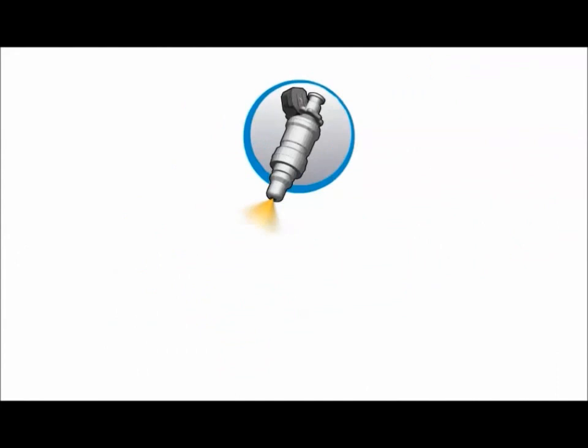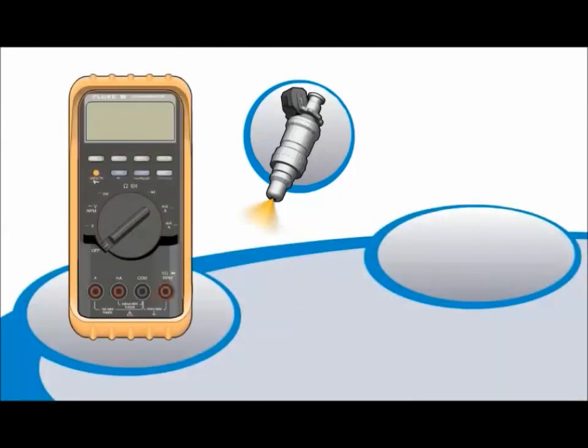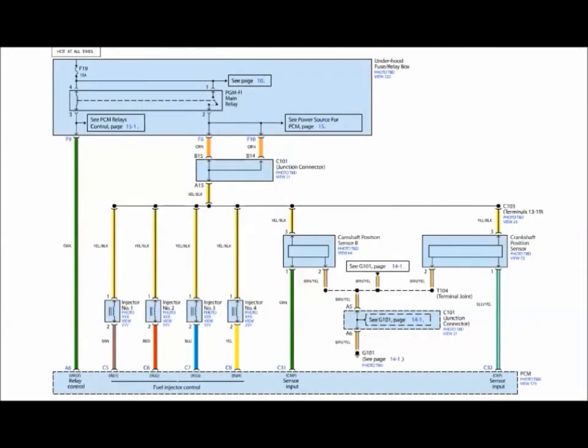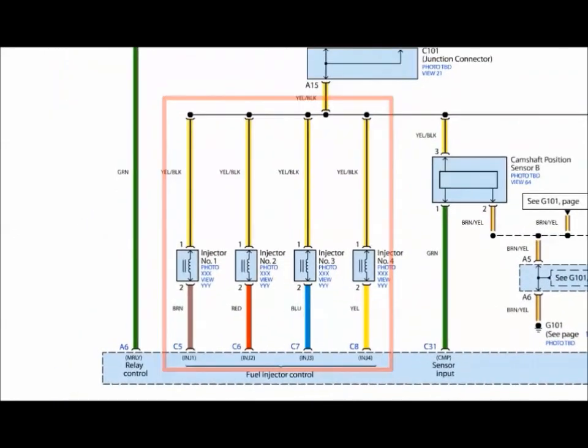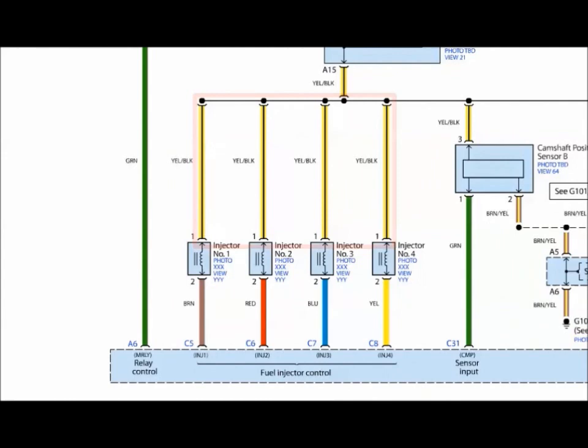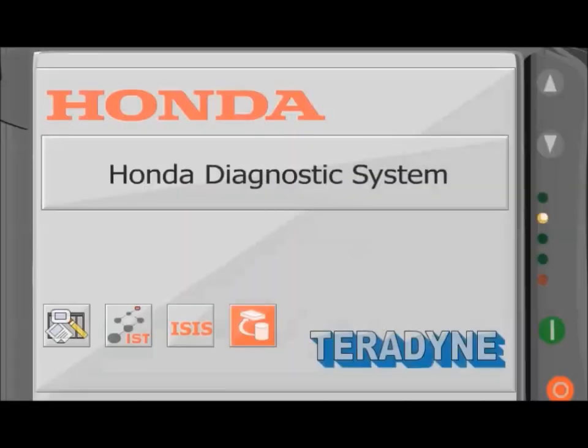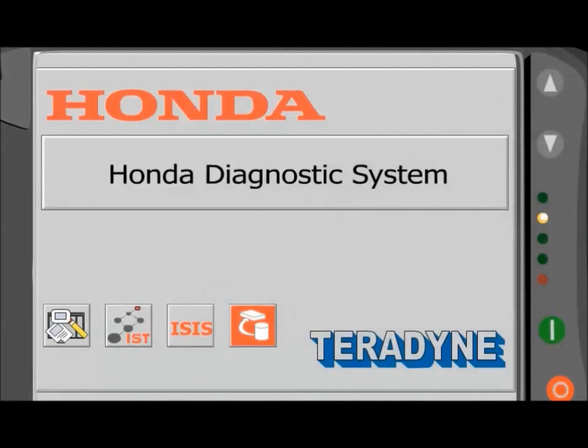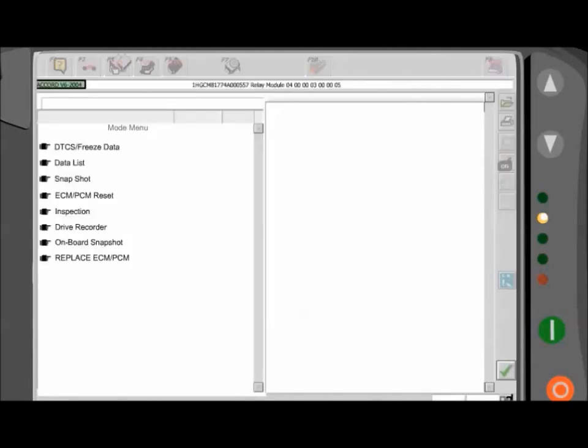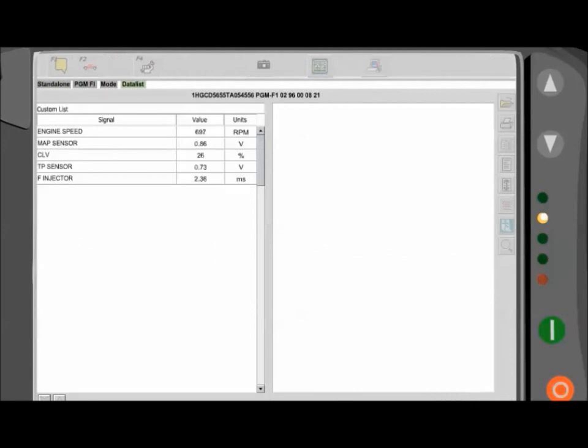The opening time is called injector duration and is measured in milliseconds or thousandths of a second. Before you can view injector duration with a DMM, you first need to figure out which wires to back-probe. Look in the ETM and see which two wires go to each injector. One wire provides power and the other ground or control. Carefully back-probe the wire with the red lead. Then connect the black lead to chassis ground. Set up the multimeter to read injector duration. To view injector duration on a scan tool, first plug in the tool and then enter the vehicle information.